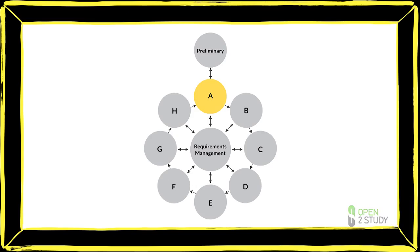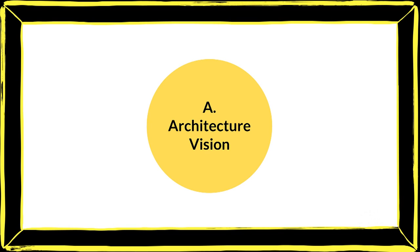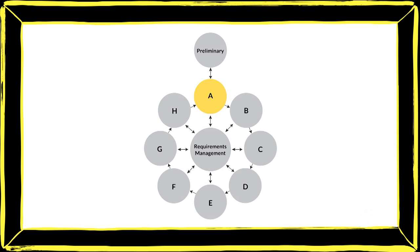Let's elaborate a little further on the architecture vision phase as we spin through the wheel. The architecture vision is really the starting point of each iteration, in other words, each spin of that wheel in that architecture vision phase.